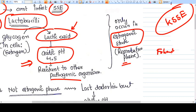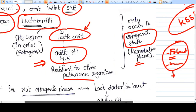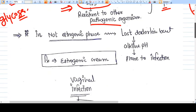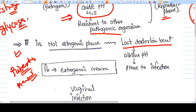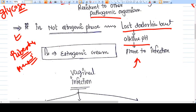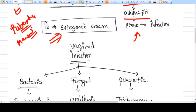This protective environment is only possible in the estrogenic state. In the follicular phase and luteal phase, the vagina is protective. But once menstruation starts, because of the decrease in estrogen and blood flow, the acidic environment changes to alkaline, making women more prone to infections. Similarly, before puberty and after menopause, there is no estrogen, the Doderlein bacteria are lost, alkaline pH develops, and they are prone to infections. For postmenopausal vaginitis, the treatment is estrogenic cream.